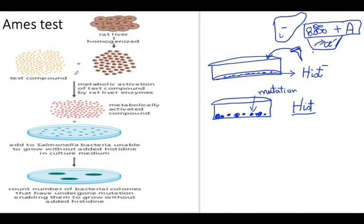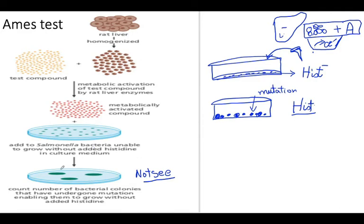In summary: rat liver homogenate and test compound are mixed together, leading to metabolic activation of that compound by rat liver enzymes. The metabolically activated compound is added to Salmonella bacteria that are normally unable to grow without added histidine in the culture medium. You then count how many histidine-independent bacterial colonies are formed. If the substance is not mutagenic, you should see no colonies. If colonies form, the testing compound has mutagenic potential, and you conclude the compound is mutagenic. This test has been used to extrapolate to in vivo studies.